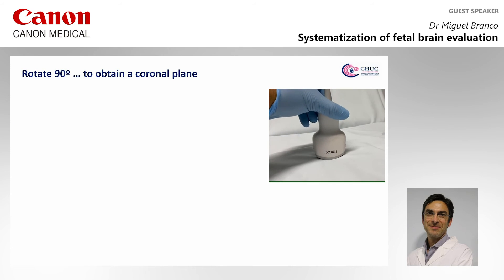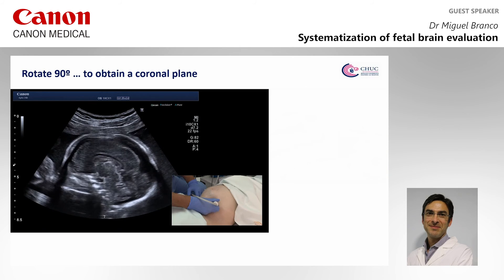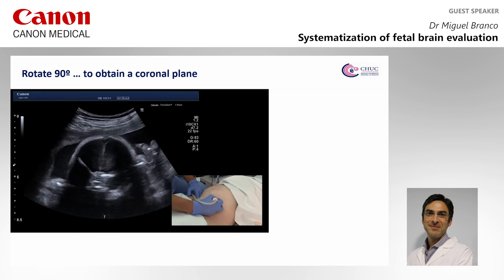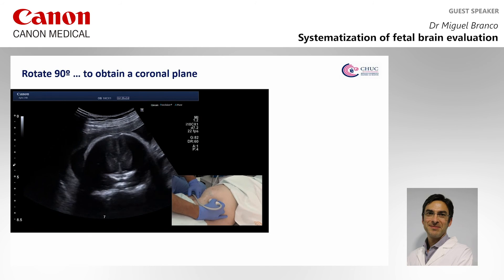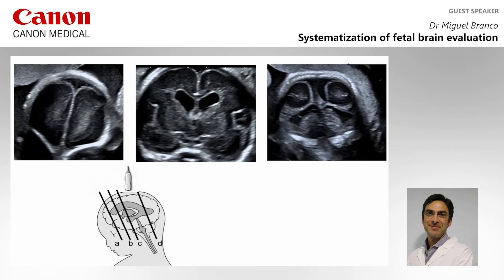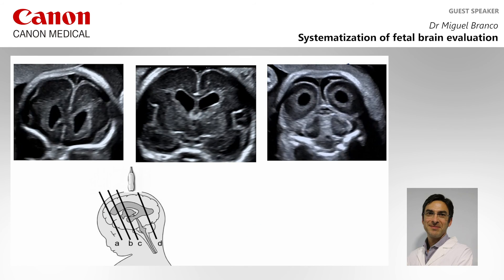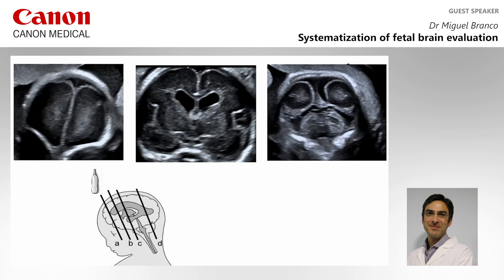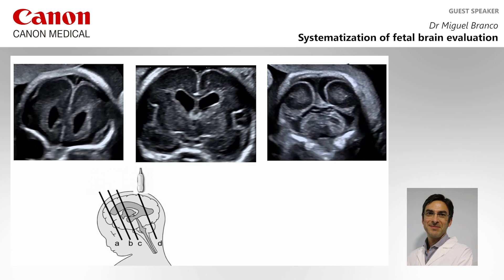By rotating the probe 90 degrees, we will obtain coronal sections of the brain from the sagittal section. You can identify the corpus callosum, the sylvian fissure, and the optic chiasma. With the combination of tilting and sliding of the probe, we will obtain all the coronal planes of the brain.